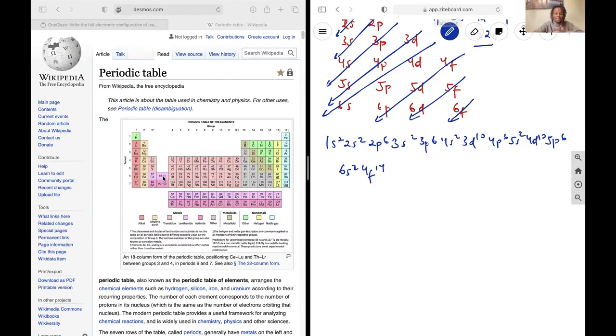And then we go into 5d10, and lastly 6p2, because we see that we only take two steps once we enter the p block, and this is going to be it for lead.